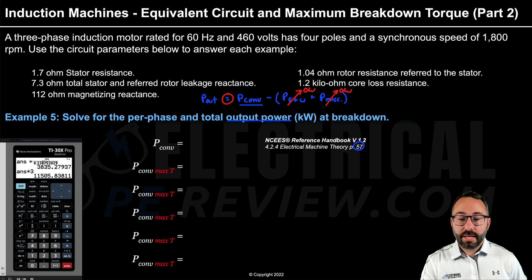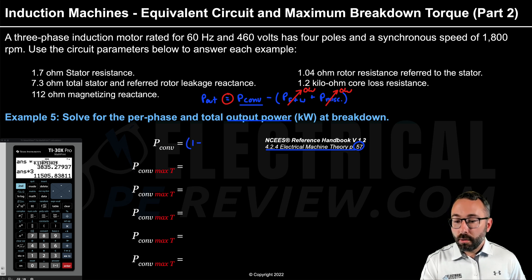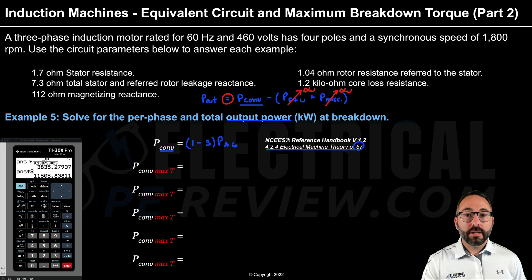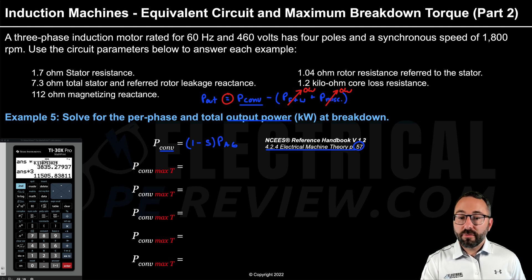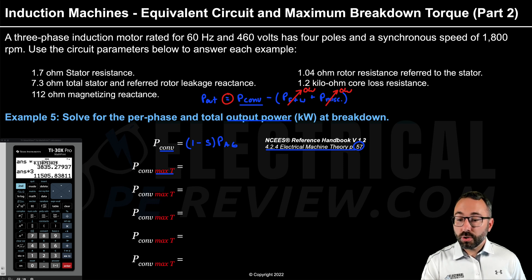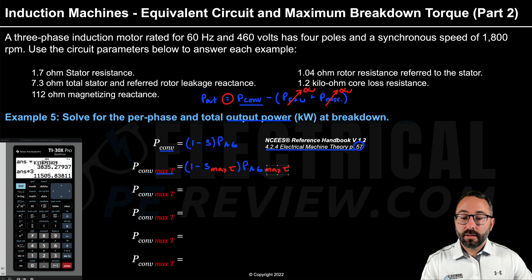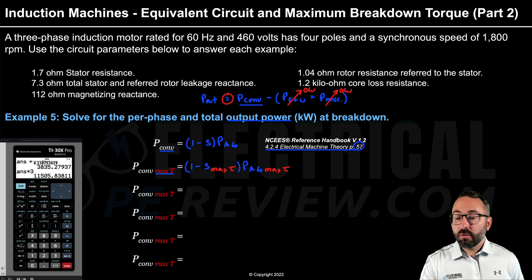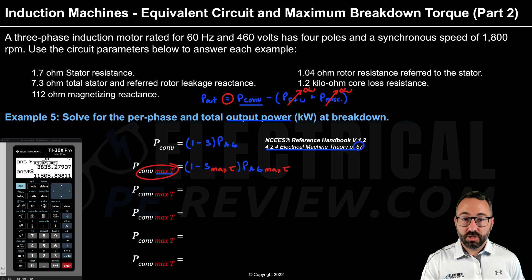To solve, we use the formula on page 57 of the reference handbook under 424 electrical machine theory: converted power equals one minus the slip of the motor, times the air gap power. We want the converted power at the point of breakdown — the brief moment when the motor delivers maximum torque. So we plug in the breakdown slip S max torque for rated slip, and plug in the air gap power at maximum torque. This gives us the converted power at maximum torque conditions.